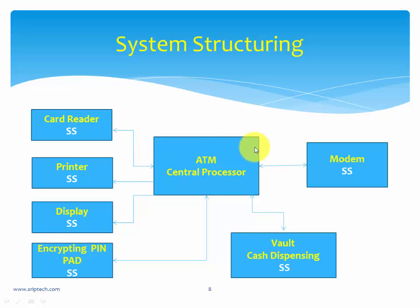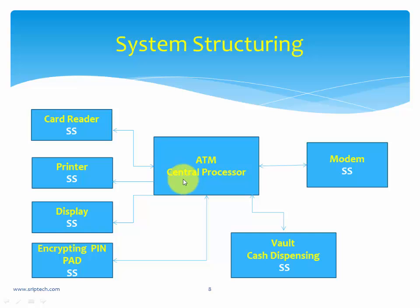The main system — the central processor of the ATM — is connected to multiple subsystems, and each subsystem is connected to the main system through a bus. A bus is a group of wires connecting a subsystem to the main system, through which data is passed in and out. This concept of breaking down the entire system into subsystems is called system structuring.